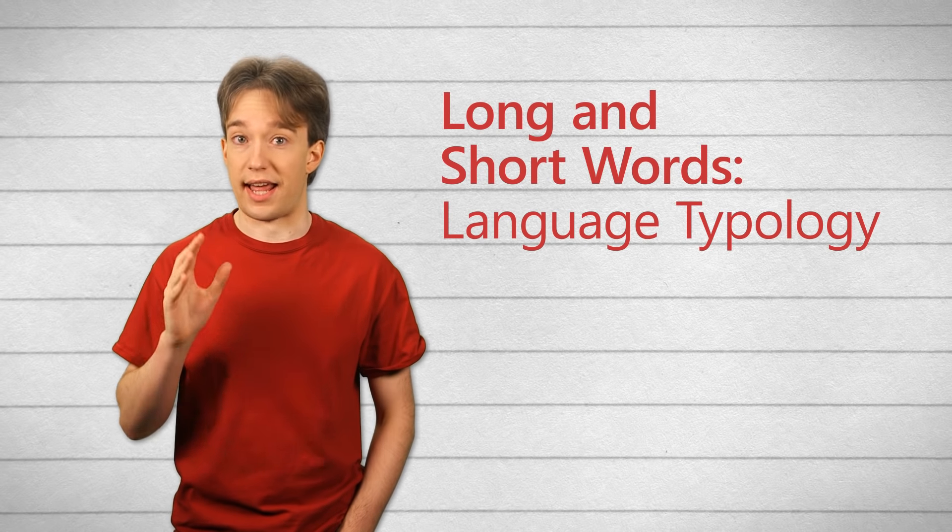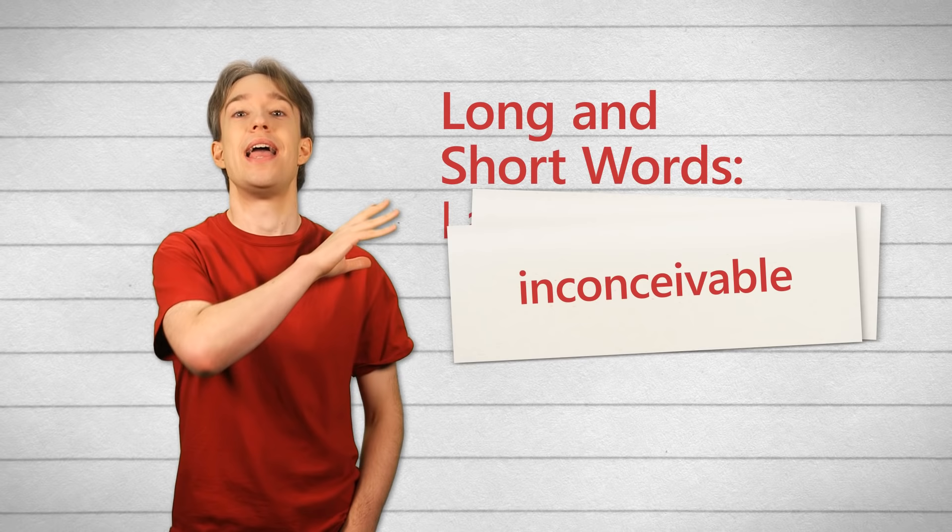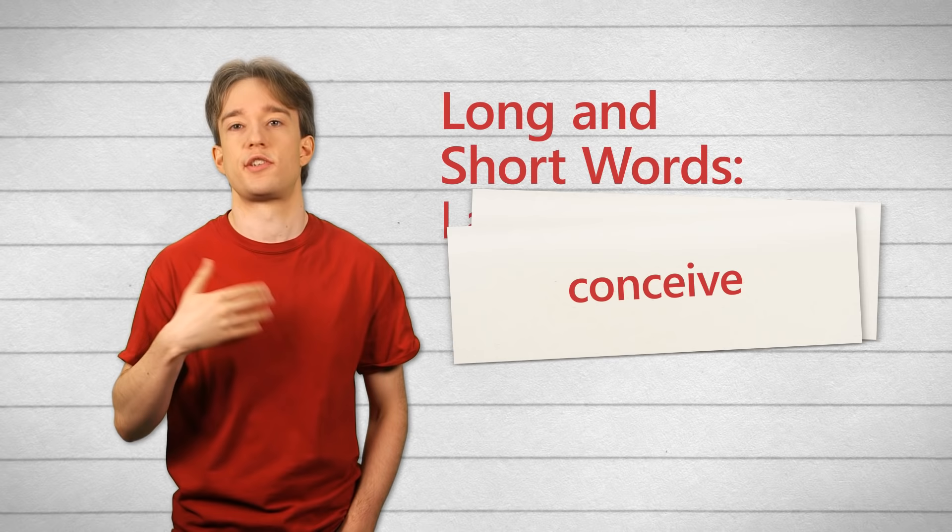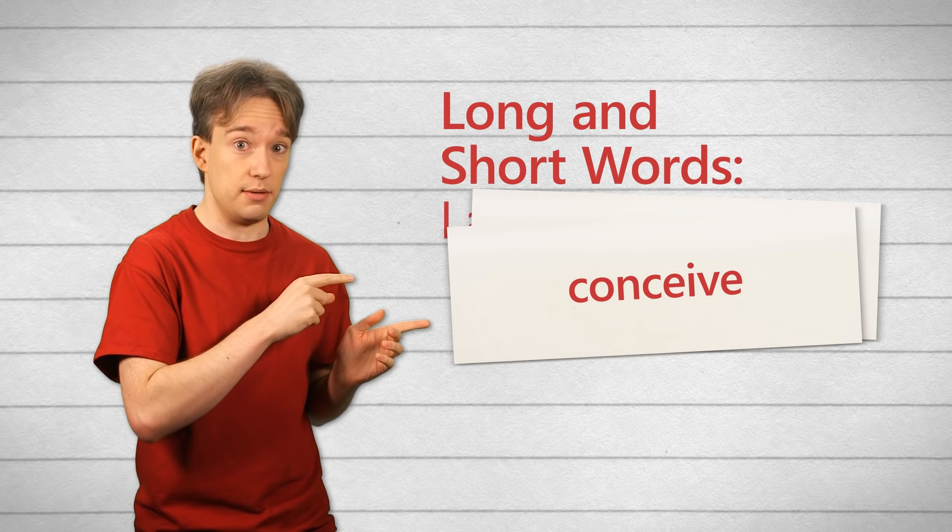The smallest unit of meaning in a language is called a morpheme. Let's take a lovely English word: inconceivable. There are three morphemes there. Conceive, which in this context means to form something in your head. Now you could break that down further if we're in old Latin, but in English that is a morpheme. Con and sieve don't mean anything on their own here.